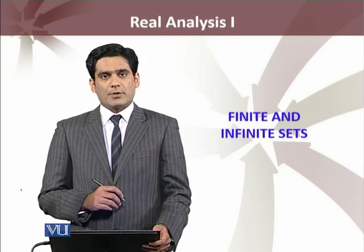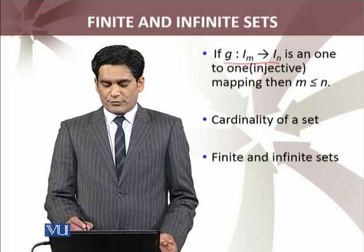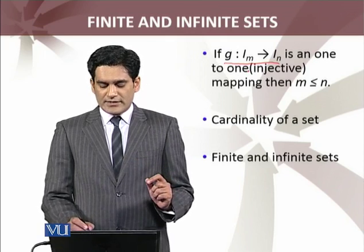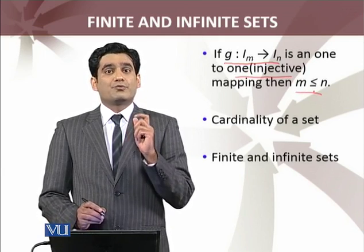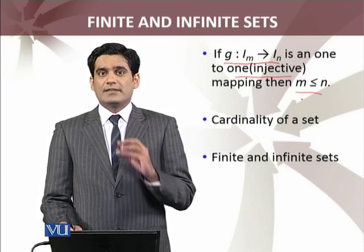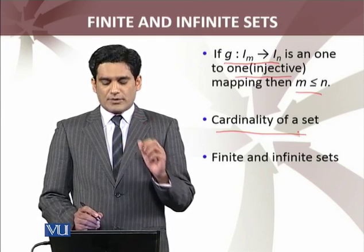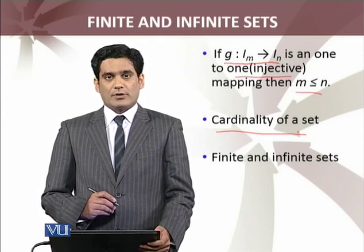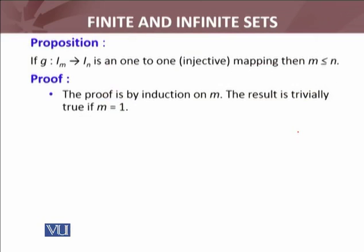Aaj isi ke saath continue karenge. Ek important proposition se ham start karenge which states that: if g is a function from some initial segment I_m to I_n and it is an injective mapping, then we must have m less than or equal to n. Agar koi bhi function hai which is one-to-one from I_m to I_n, then m should be less than or equal to n.